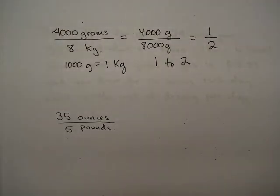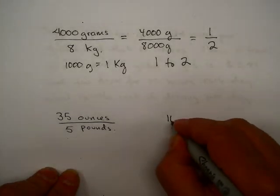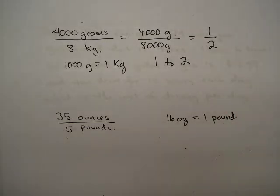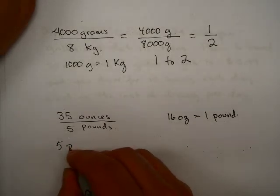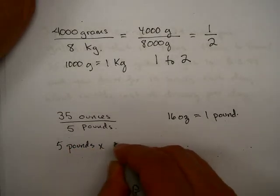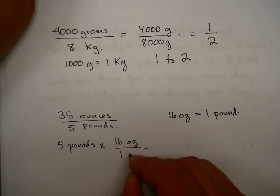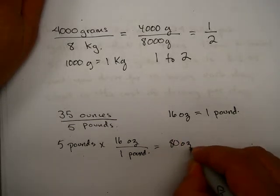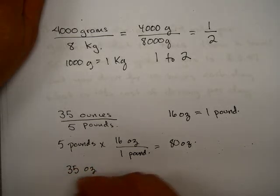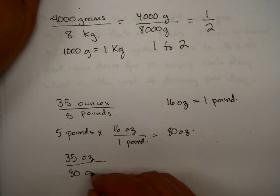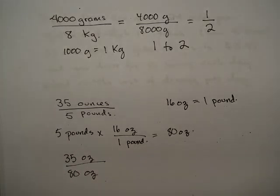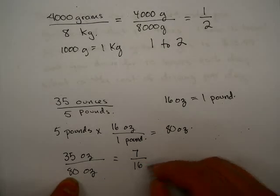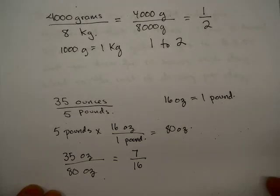35 ounces in 5 pounds. I need to tell you that there are 16 ounces in 1 pound. Let's convert. If I have 5 pounds, I want to multiply by 16 ounces in 1 pound. 16 times 5 is 80 ounces. So 35 ounces over 80 ounces. You can reduce this fraction, dividing by 5 on top and bottom. That will give you 7 over 16. So this would be 7 sixteenths, or 7 to 16.